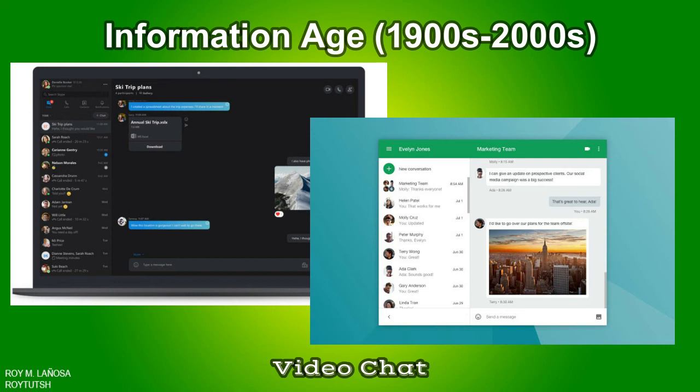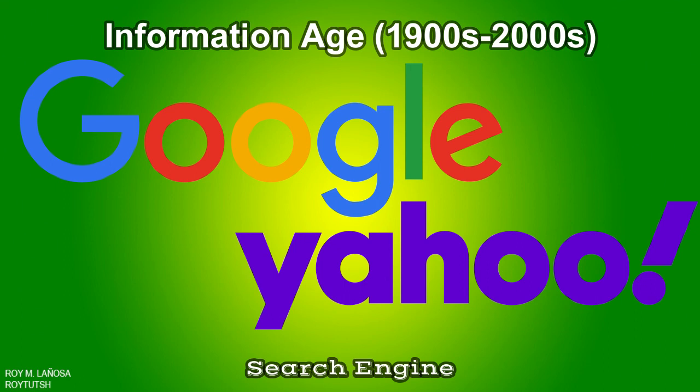True video chat is more like text chat, whereby one party sends a message and waits for a reply. A search engine is a software system designed to carry out a web search — searching the World Wide Web systematically for particular information specified in a textual web search query. Search results are generally presented in a line of results often referred to as search engine results pages. The information may be a mix of links to web pages, images, videos, infographics, articles, research papers, and other types of files.